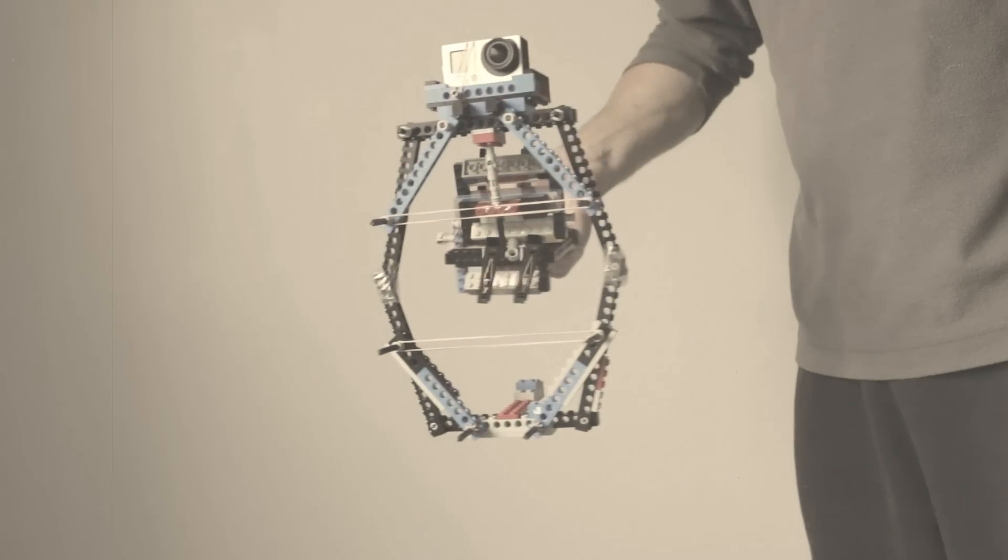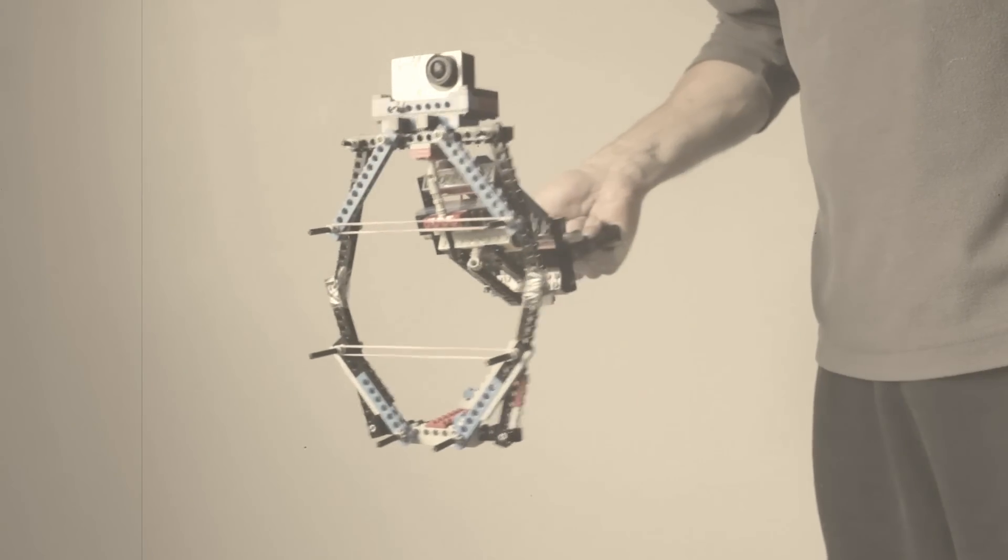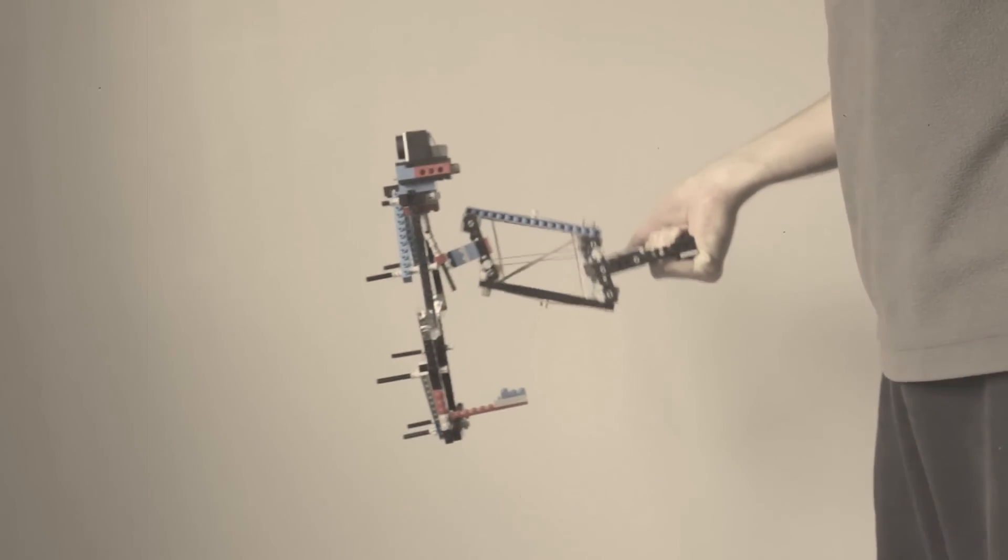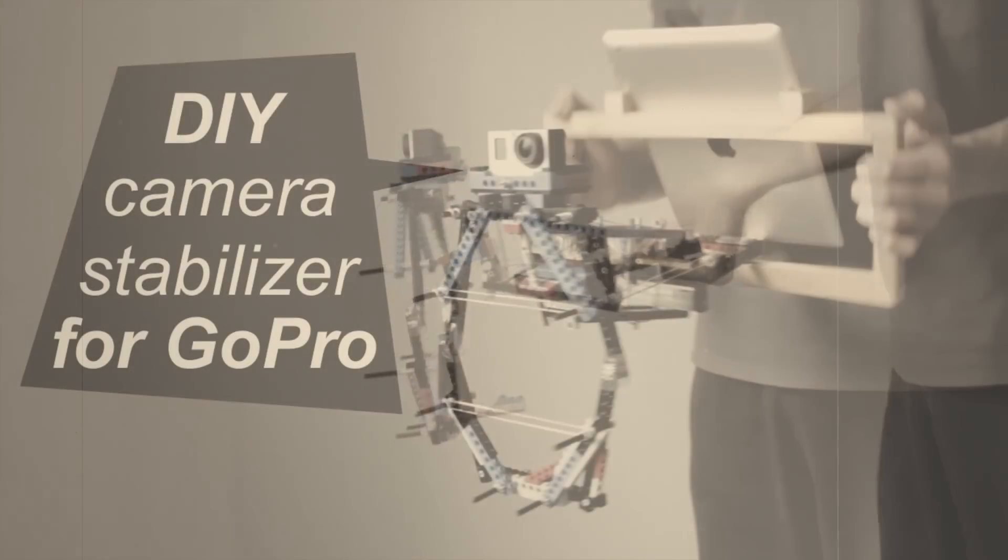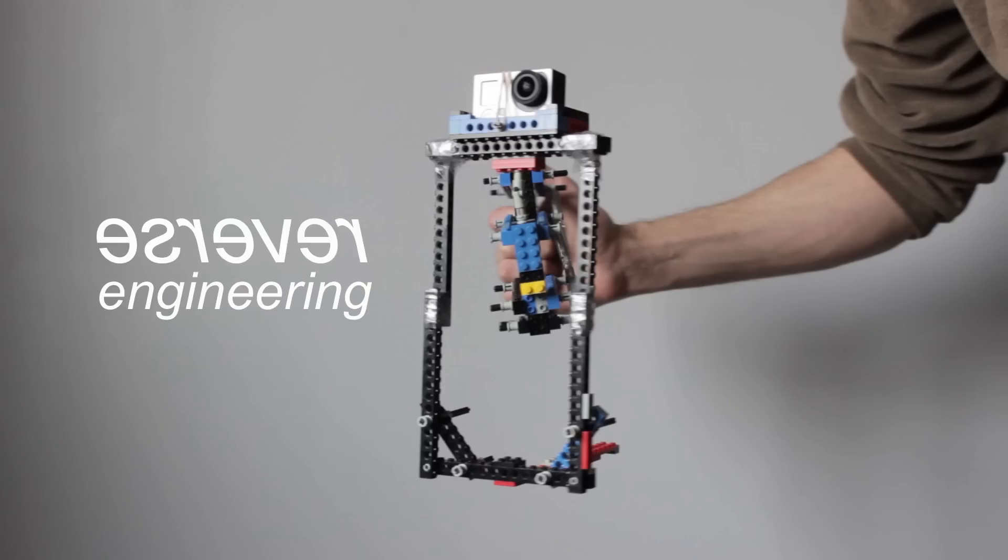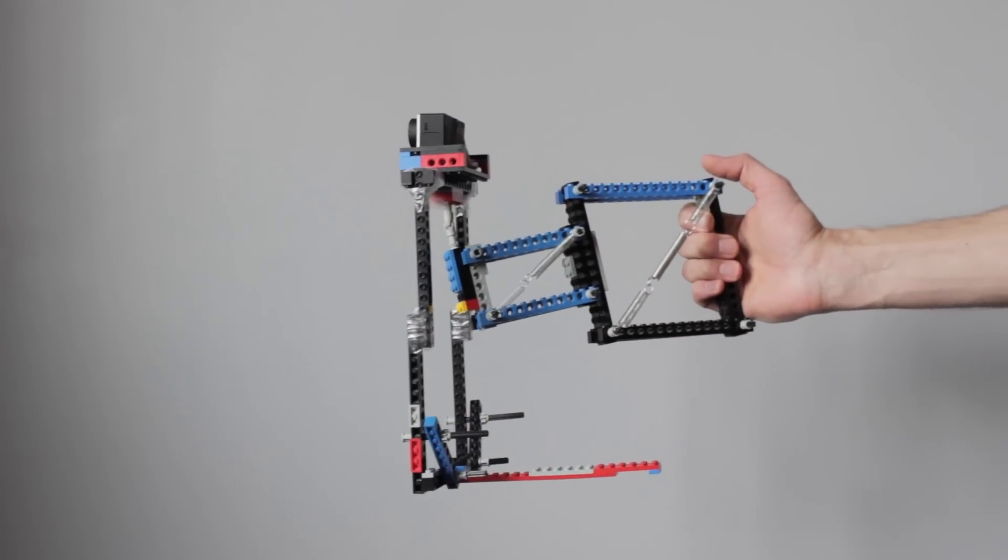Quite a while ago I made a Lego stabiliser that a few people have asked for a tutorial on. Looking at the design I thought I could make it simpler, so after a bit of reverse engineering I made this.